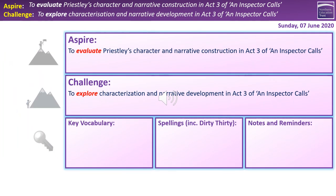That leads us to our final overview. Hopefully all of you feel you've managed to explore points about narrative and characterisation in Act 3 — if you've gone through those tasks today, you can't really avoid having done that. Hopefully a lot of you will also feel you've achieved that Aspire outcome of evaluating Priestley's character and narrative construction in Act 3. All that work on Eric and drawing together of those ideas does facilitate that. Thank you very much for your time. I'll see you in our next session, which will be on poetry. Take care.